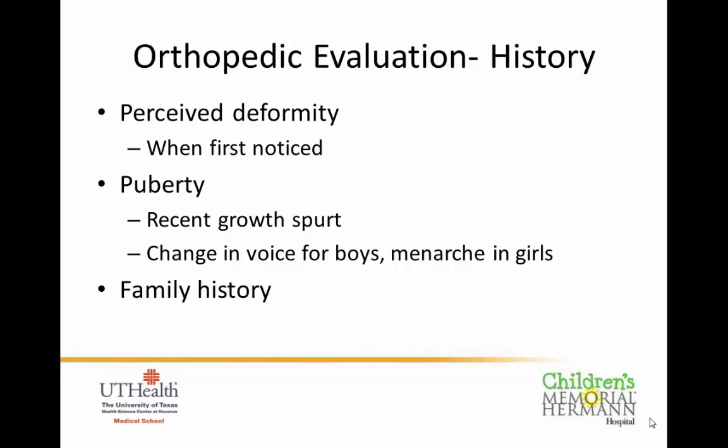Once referred to the orthopedic surgeon, we start with a history. We ask about any perceived deformity and when it was first noticed, whether the child has hit puberty or had a recent growth spurt, and puberty indicators such as voice changes in boys or onset of periods in girls — to gauge growth remaining. We also ask about family history of scoliosis, any back pain, and neurologic symptoms including numbness, tingling, weakness, or bladder and bowel issues.